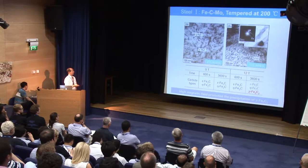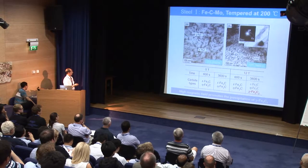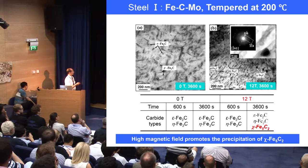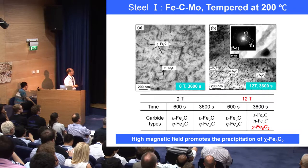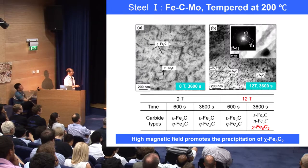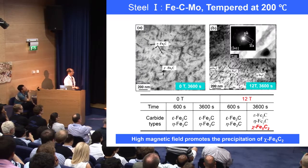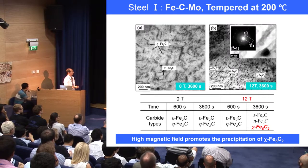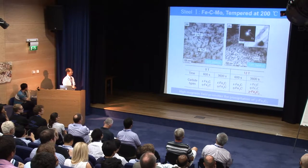We also performed heat treatment for martensitic tempering for this alloy. The left image shows the precipitation without the presence of high magnetic field. When a high magnetic field is applied, a new cementite is formed in the specimen — Fe5C2 is precipitated. That is to say, the high magnetic field promoted the formation of Fe5C2.